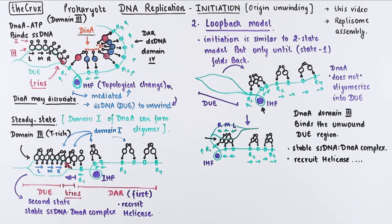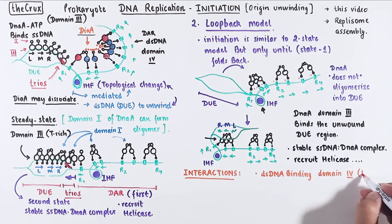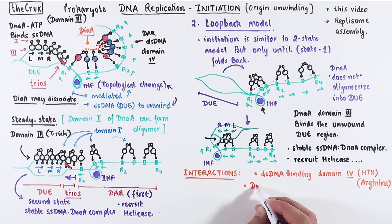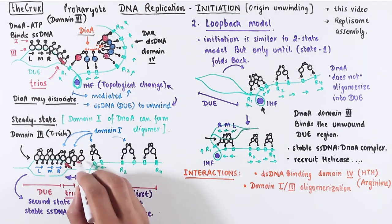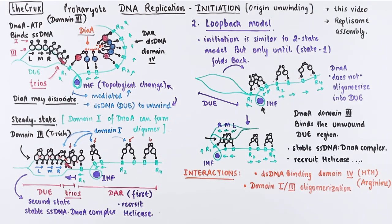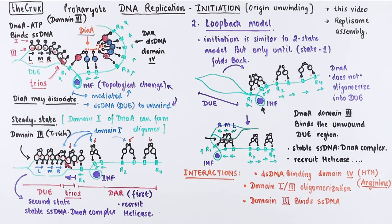Before we end here, I want to point out some of the amino acids involved in these interactions. The double-strand DNA binding of DnaA domain 4 is occurring through a helix-turn-helix domain, which contains arginine residues that can scan the major and minor groups of the 9-mer repeats. The domain 1 oligomerization and sometimes domain 3 head-to-tail oligomerization involves the interaction of arginine residues. Domain 3 of DnaA protein binds the single-stranded DNA at the DUE region because of specific arginine residues as well, and some valine residues. So arginine seems to be a very crucial amino acid to mediate all these interactions.